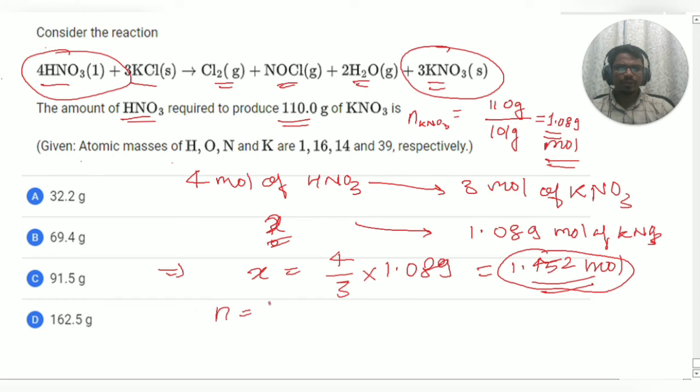So, we are having N and we are supposed to calculate that W and we know the molar mass of HNO3 that is 63. So, further it can be done by 1.452 is equals to W divided by 63 and W is equals to 1.452 multiplied by 63 is equals to 91.5 gram.